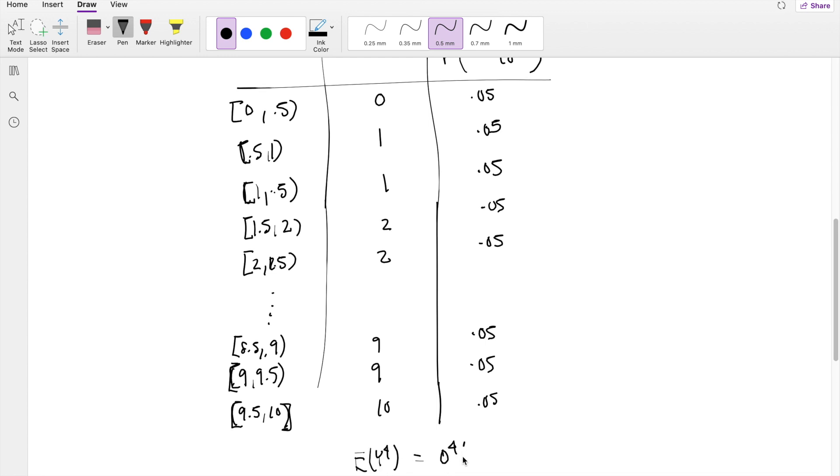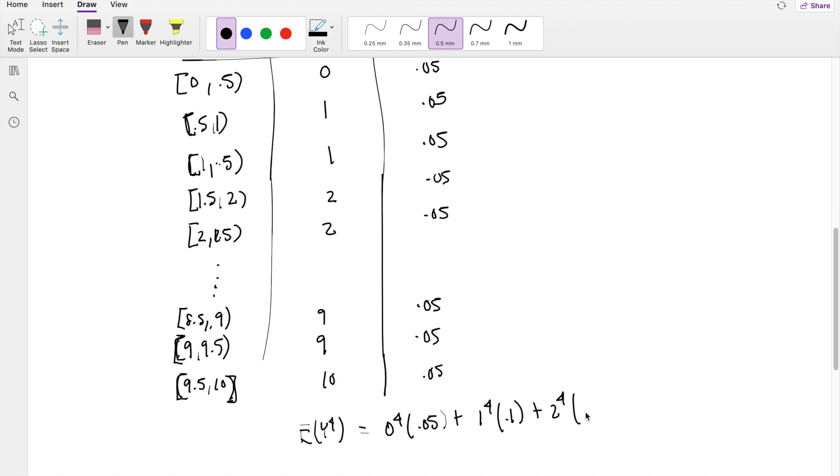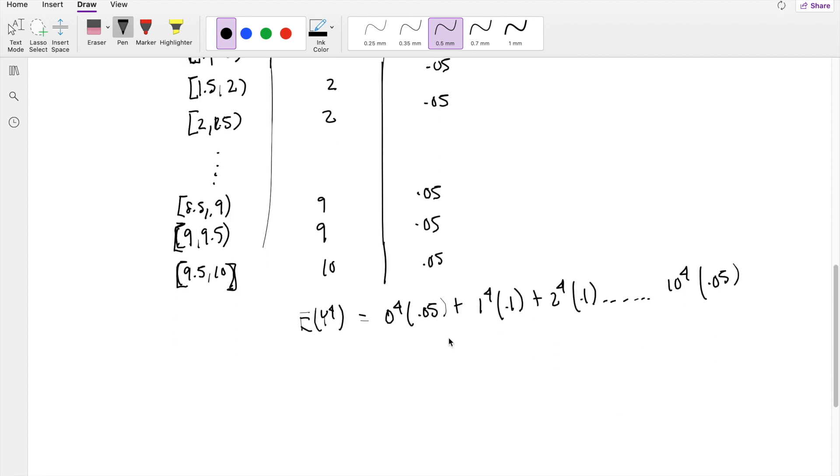0^4 times probability 0.05, plus 1^4 times probability 0.1, plus 2^4 times probability 0.1, and this continues with probability 0.1 until we get to 10, which has probability 0.05. We can factor out 0.1 from the middle terms.